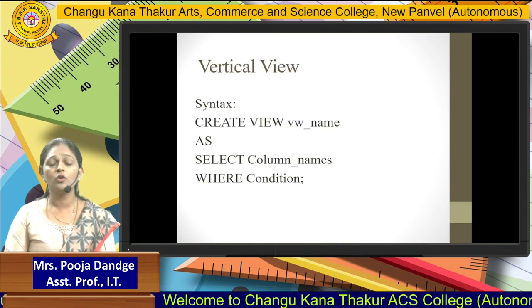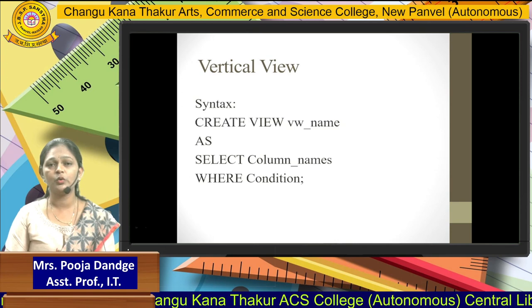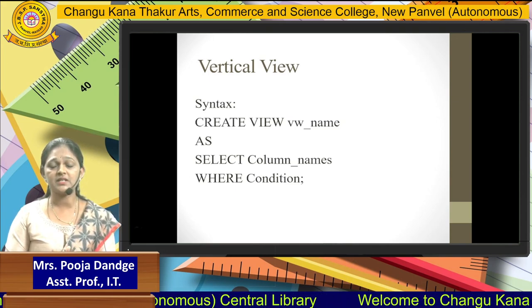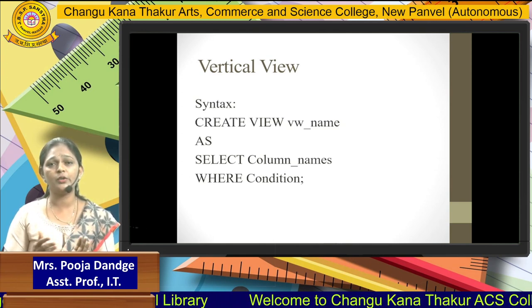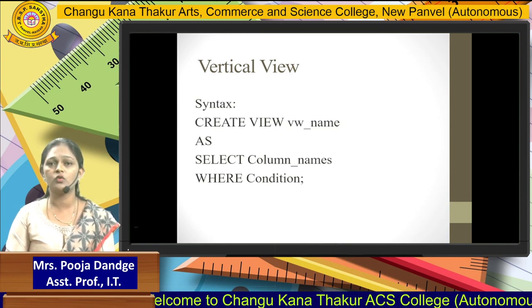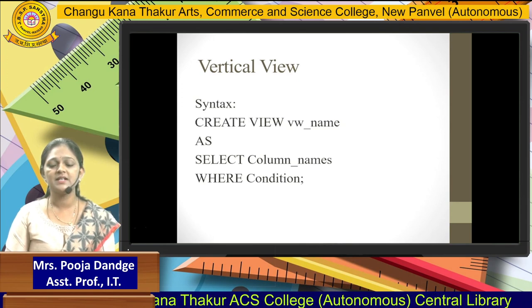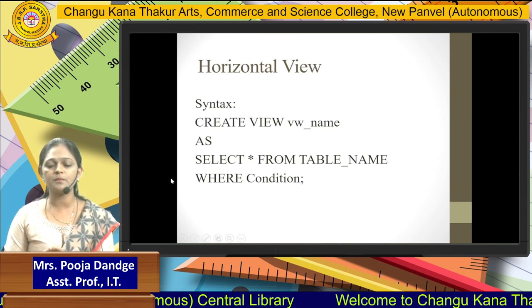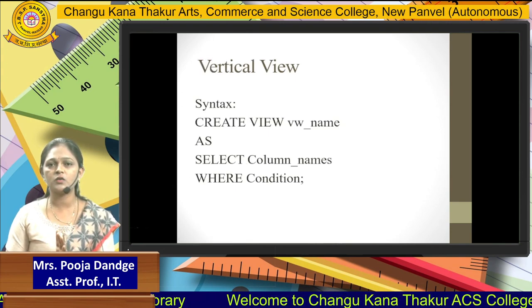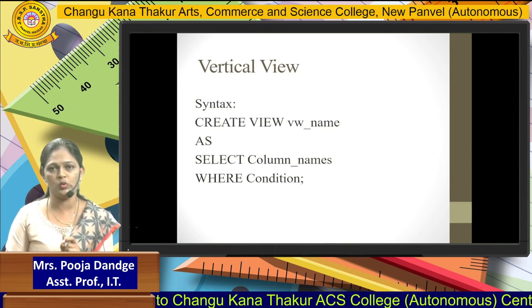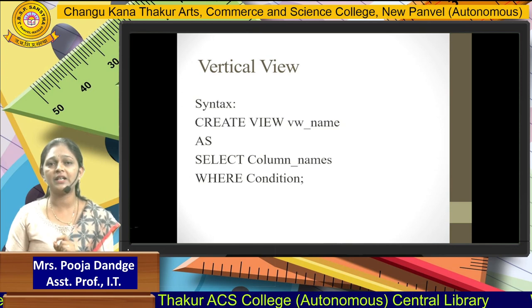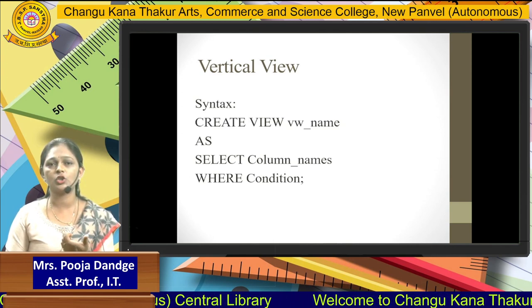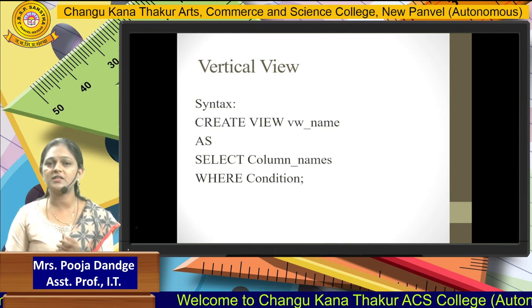The vertical view cuts the table vertically, meaning it is related to your columns. Here you can restrict to a minimum number of columns — selecting only two or three columns depending on your requirement. The syntax is: CREATE VIEW view_name AS SELECT column_name FROM table_name. The difference from the horizontal view is that instead of SELECT *, you specify particular column names only. Again, the WHERE clause for row conditions remains optional.